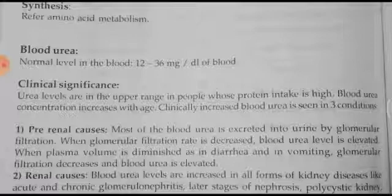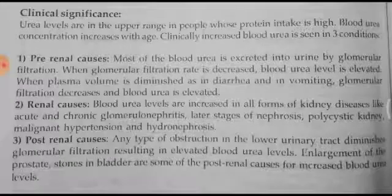Pre-renal causes: most blood urea is excreted into urine by glomerular filtration. When glomerular filtration rate decreases in the nephron, blood urea is elevated. When plasma volume is diminished — as in diarrhea and vomiting — water loss decreases plasma volume, which decreases glomerular filtration rate, and blood urea becomes elevated. These are pre-renal causes, not directly due to kidney dysfunction.